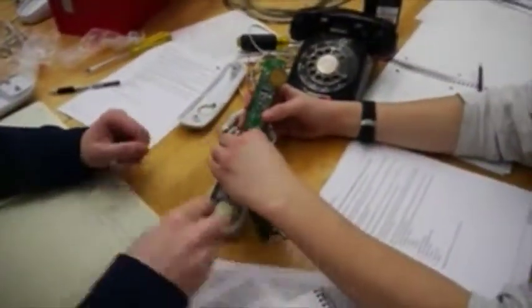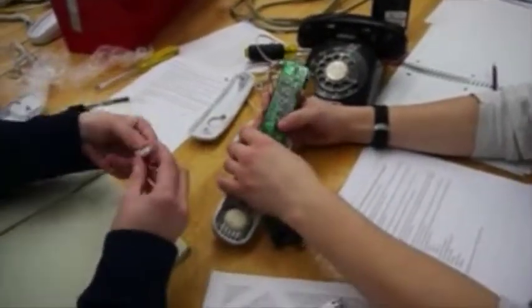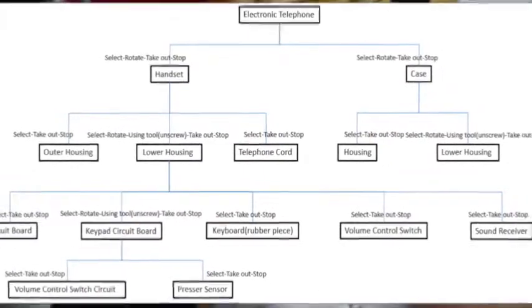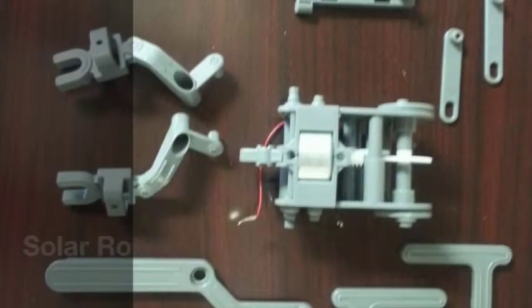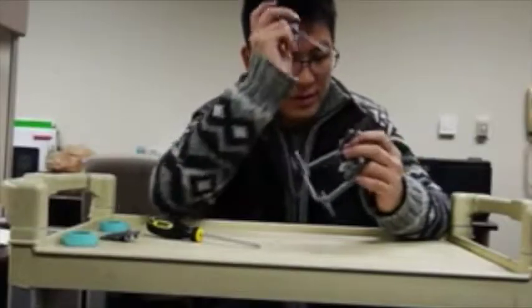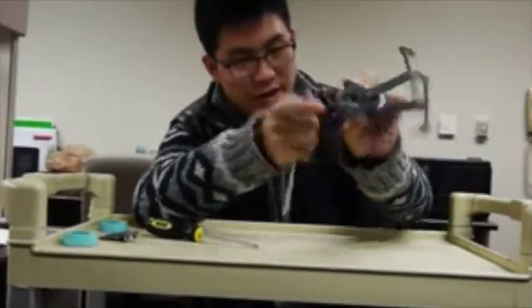To understand what kinds of gestures are intuitive during dissection, we looked at how students perform physical dissection activities. We asked participants to dissect three products of various levels of complexity: a telephone, which is a simple product; a Nerf gun, which is of average complexity; and a solar robot, which is of high complexity.